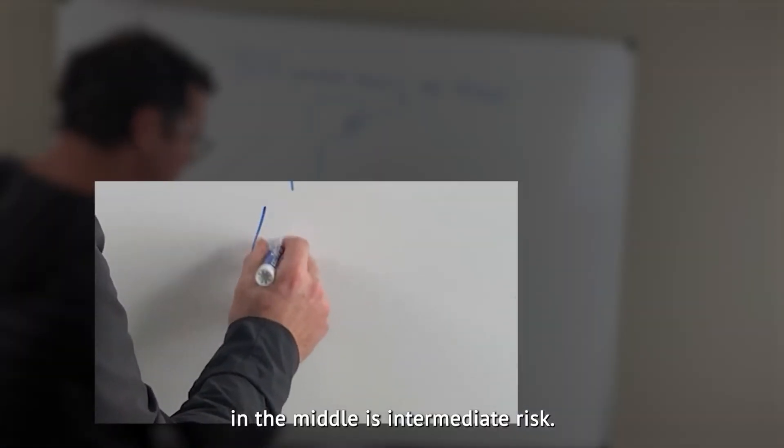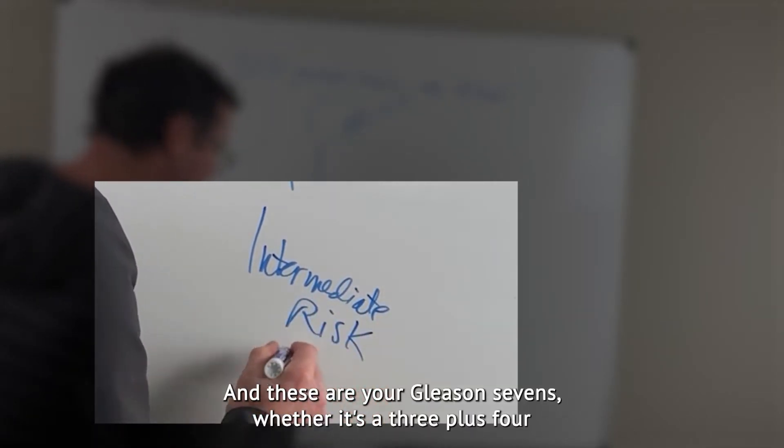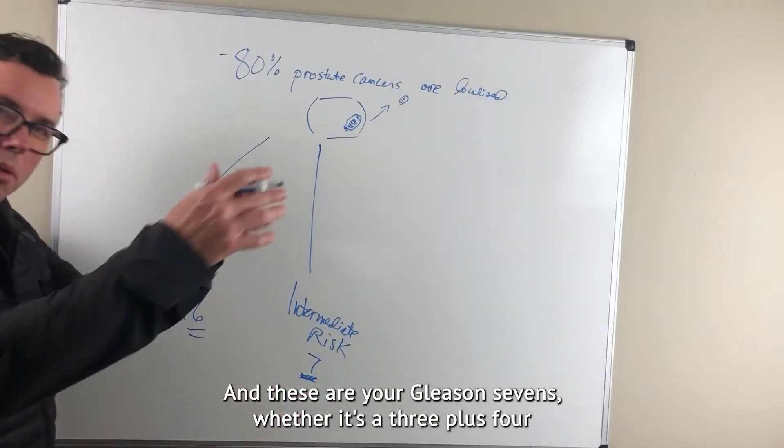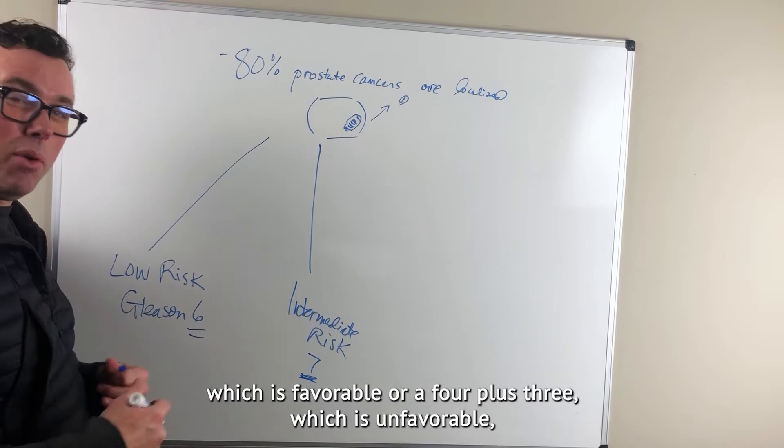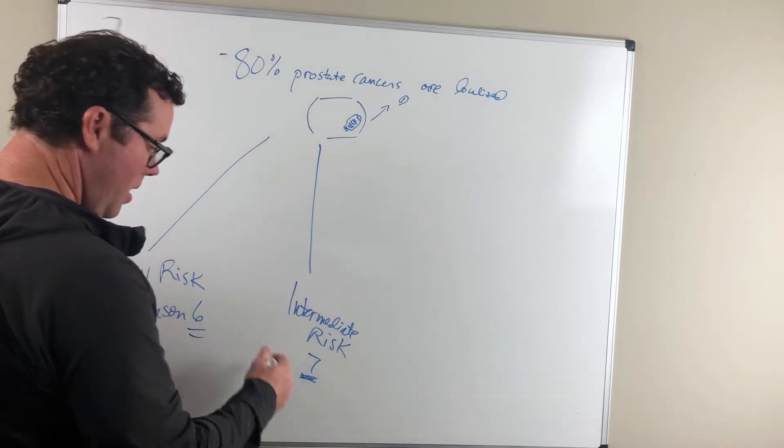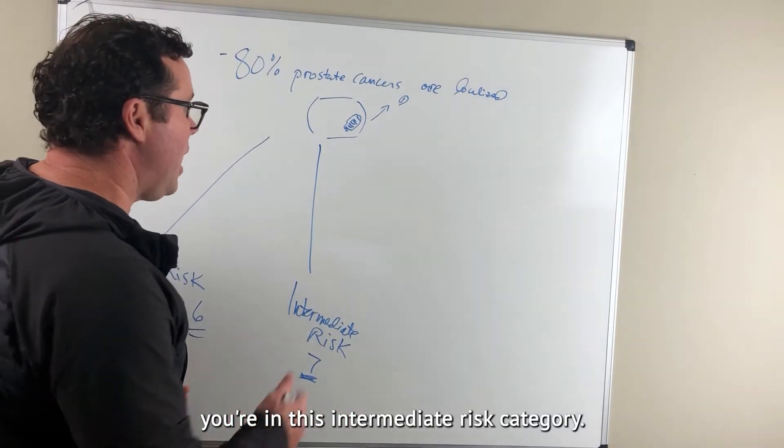In the middle is intermediate risk. And these are your Gleason 7s, whether it's a 3 plus 4, which is favorable, or a 4 plus 3, which is unfavorable. If you have a Gleason 7 cancer, you're in this intermediate risk category.